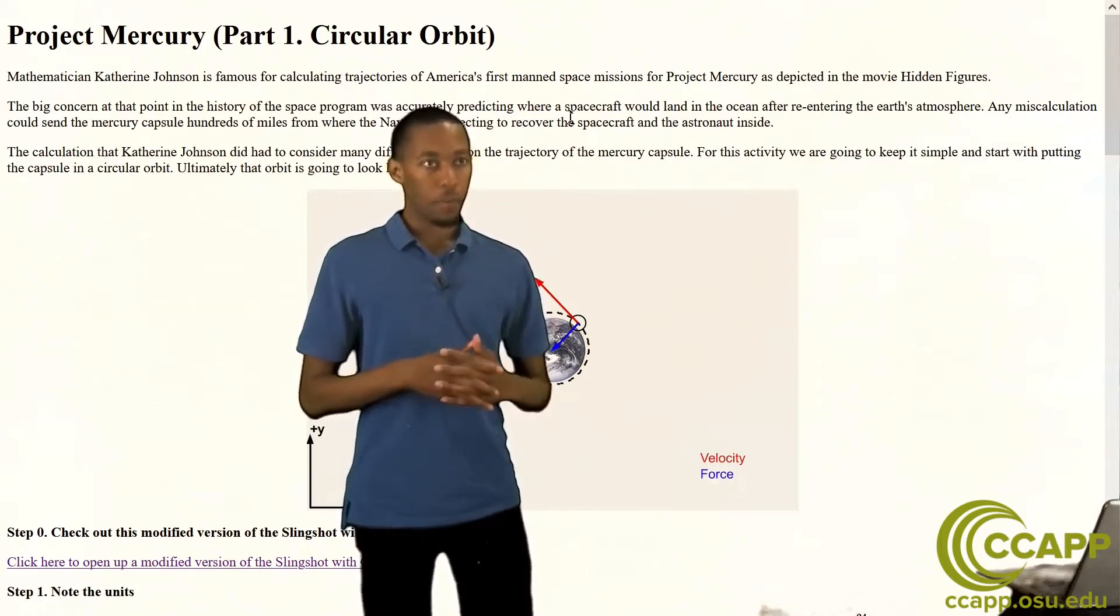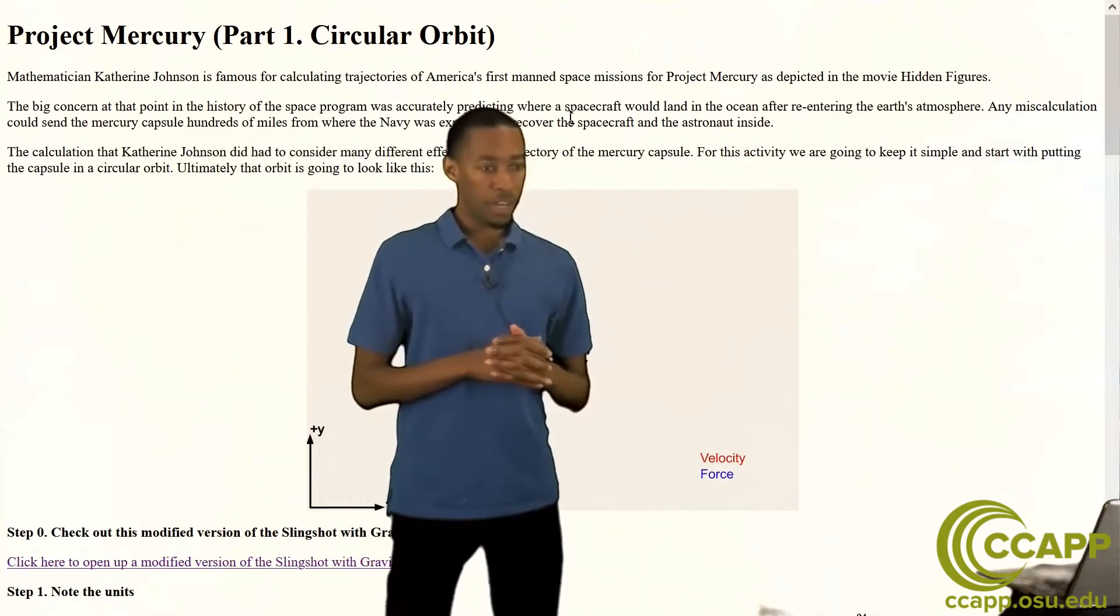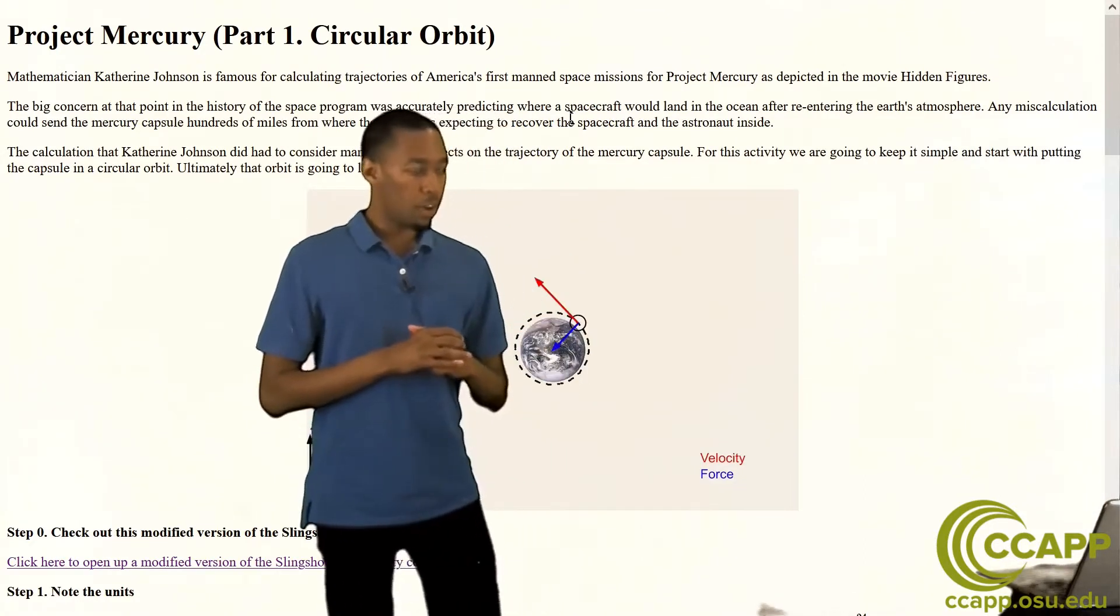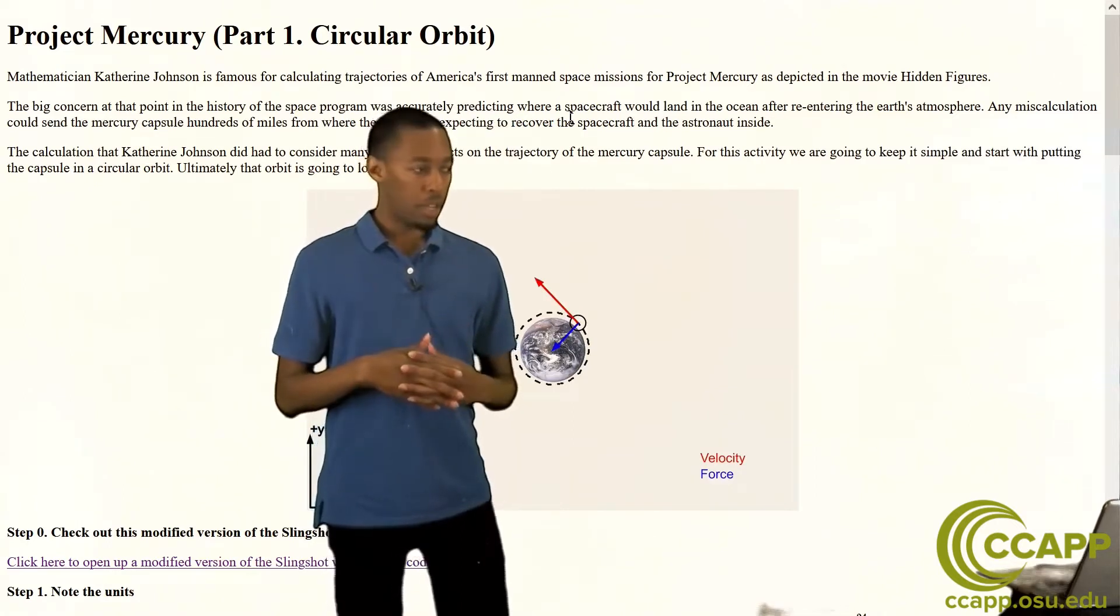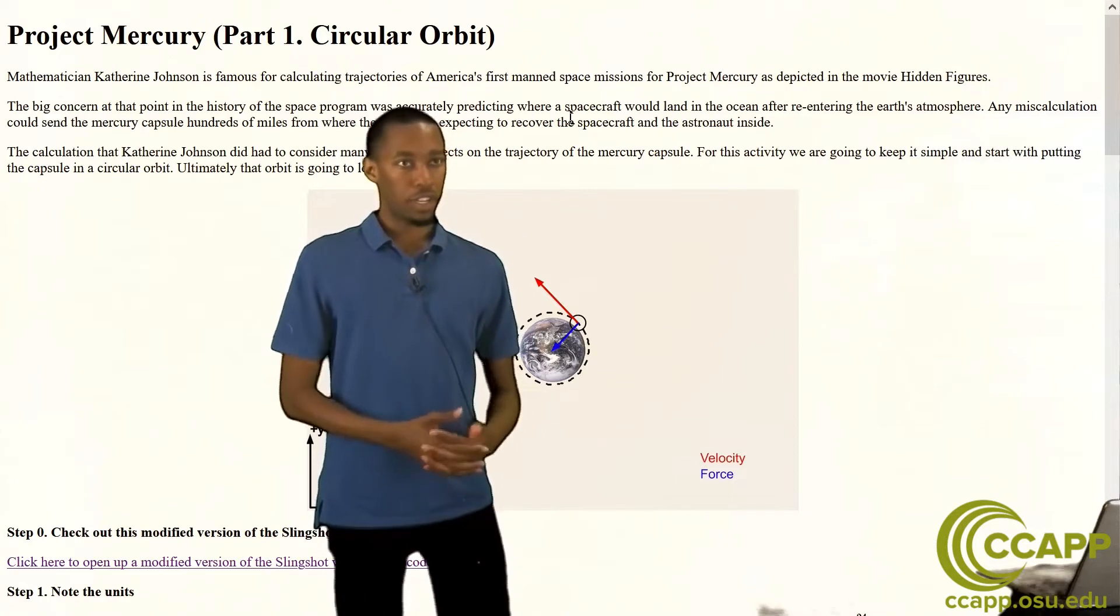And today we're going to start by going over that a little bit and this is really being done at a basic level, sort of the introductory physics level. Of course what Miss Johnson was doing was much more complicated than what we're going to do here, but we'll start with a simple case and build up and eventually get into part two where we talk more about some of the calculations she did.